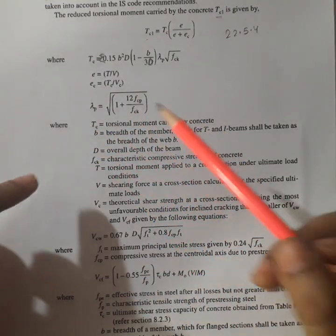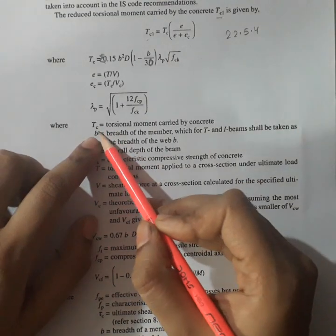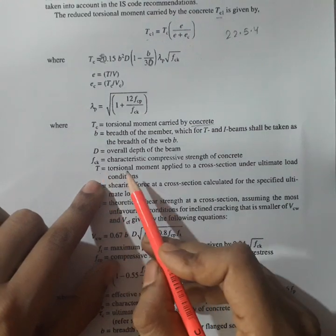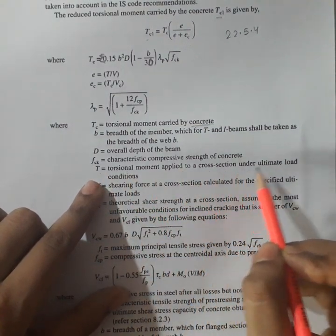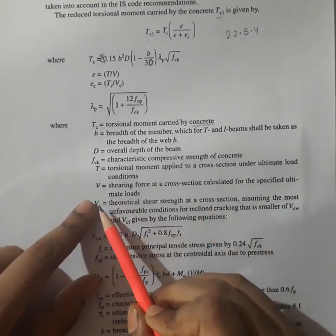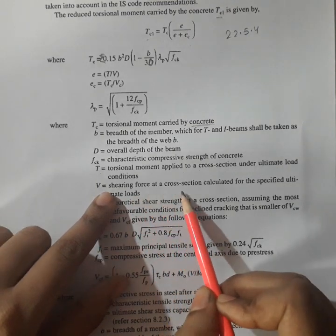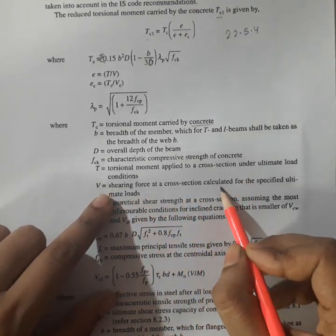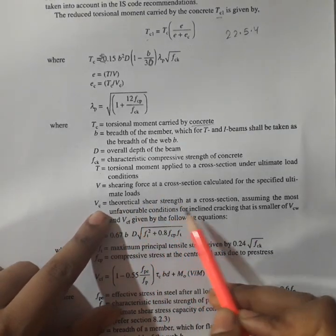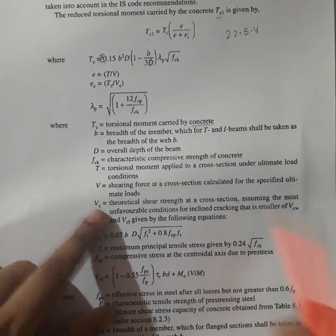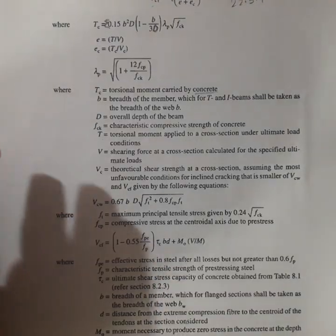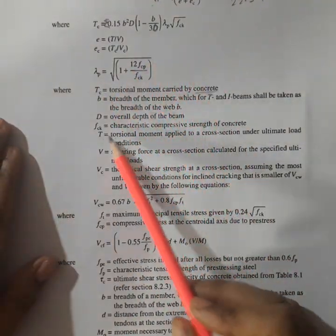Here this small e is representing T by V and this small ec is representing TC by VC. What is the difference between T and TC? TC is the torsional moment carried by the concrete and T is the torsional moment applied to a cross section under ultimate load condition. What is the difference between V and VC? V is shearing force at the cross section calculated for the specified ultimate loads and VC is equal to the theoretical shear strength at cross section. As follows, all the above expressions description has been given.